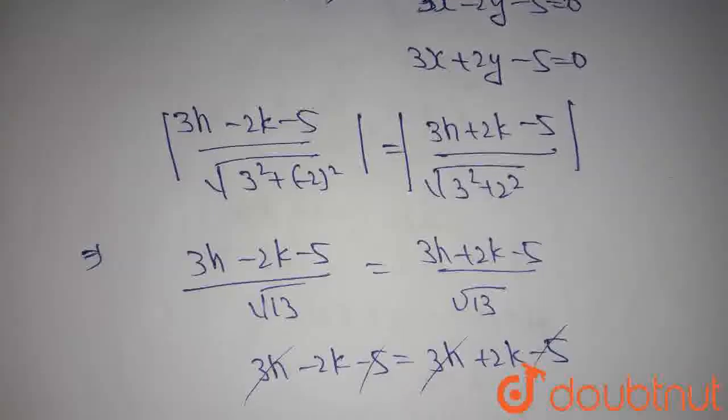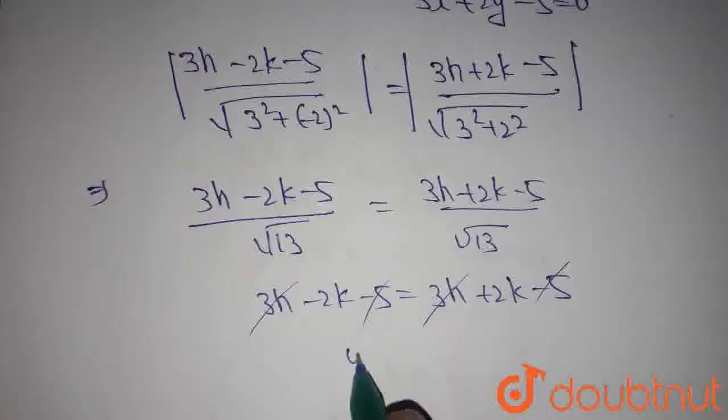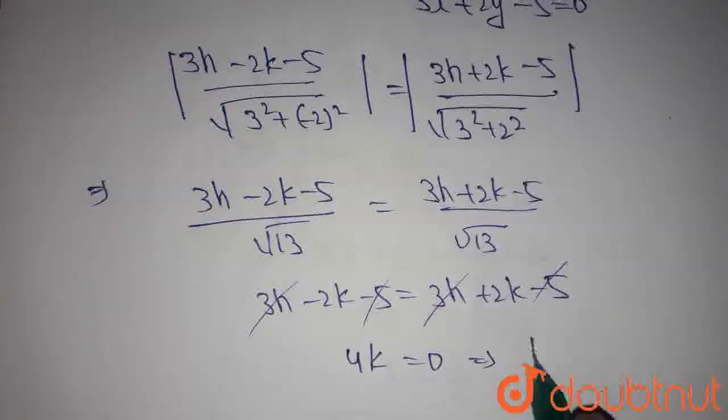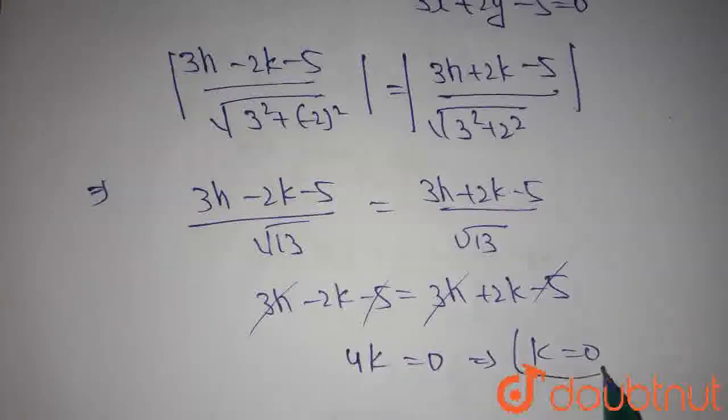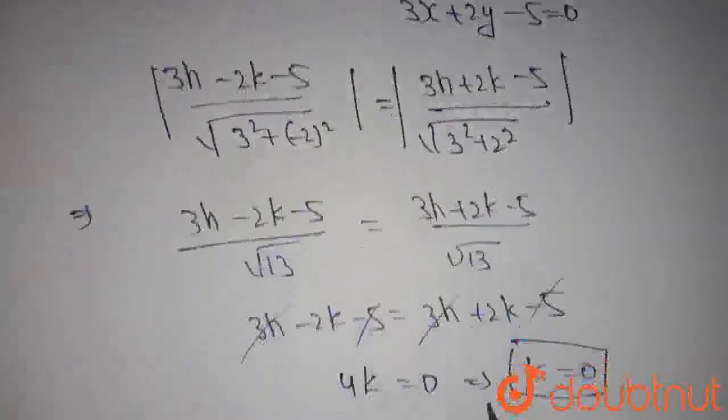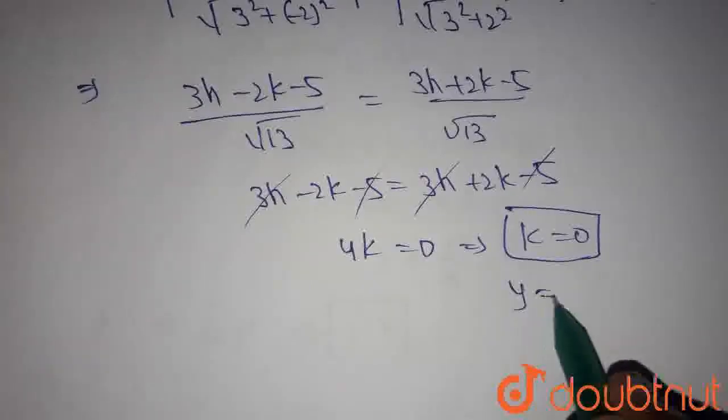Then we remain with -4k=0, which means k=0. k is the y-coordinate of point P, so we get y=0.